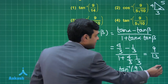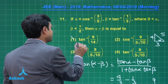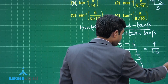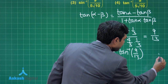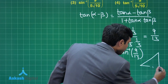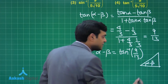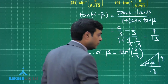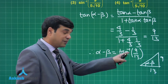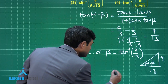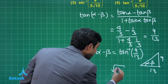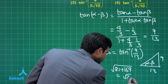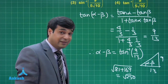So α − β = tan⁻¹(9/13). Checking the given options, 9/13 in tan⁻¹ form isn't listed. Let's convert by drawing the triangle for tan(α − β) = 9/13: using Pythagoras, the hypotenuse is √(81 + 169) = √250 = 5√10.